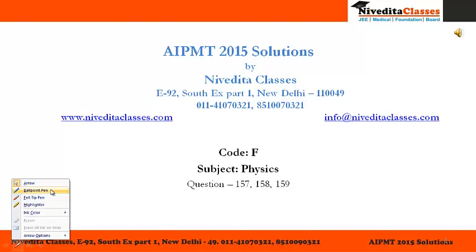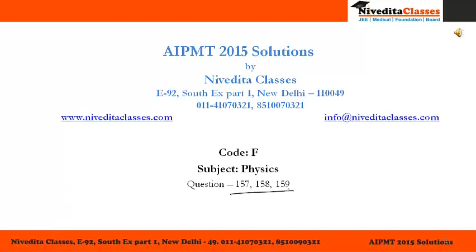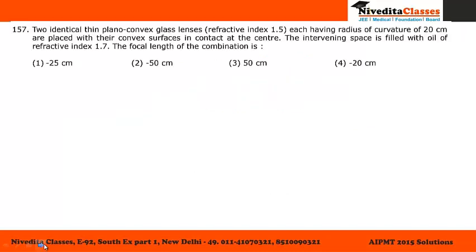Now let us discuss question number 157, 158 and 159 from code F. Question 157 says: two identical thin plano-convex glass lenses of refractive index 1.5, each having radius of curvature 20 cm, are placed with their convex surfaces in contact at the center. The intervening space is filled with oil of refractive index 1.7. We have to find the focal length of the combination.